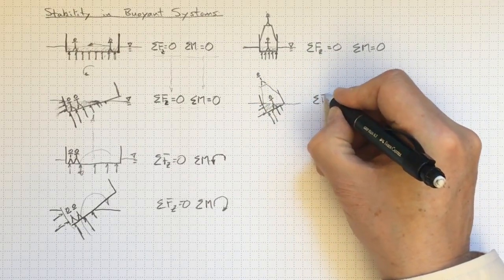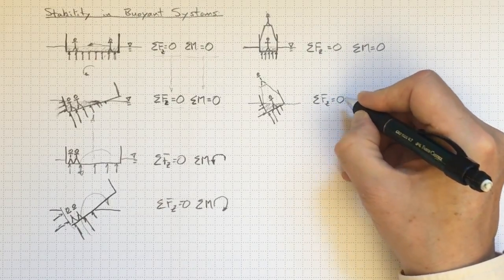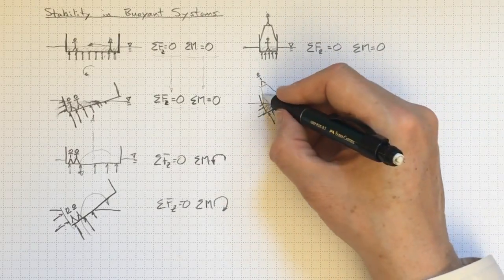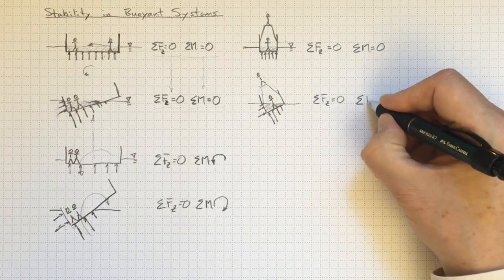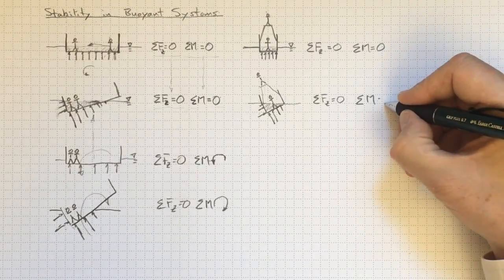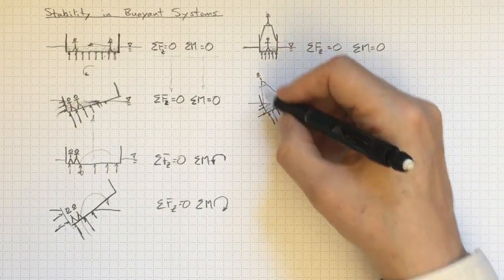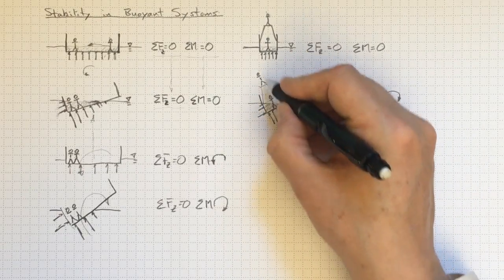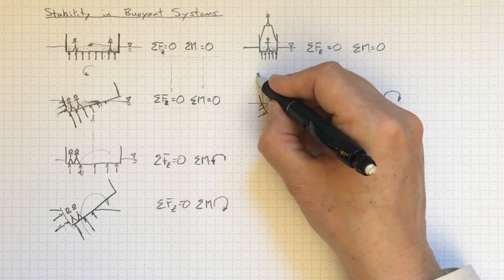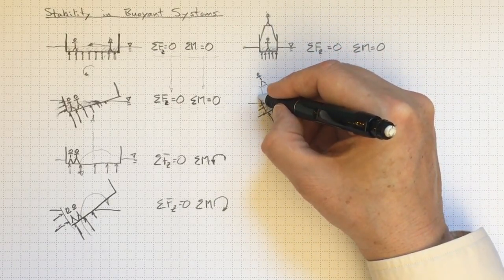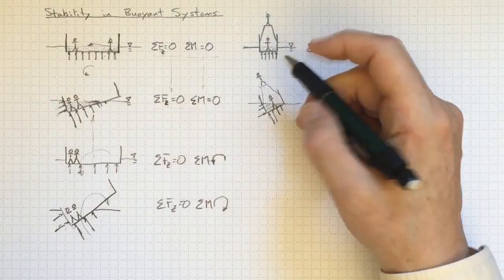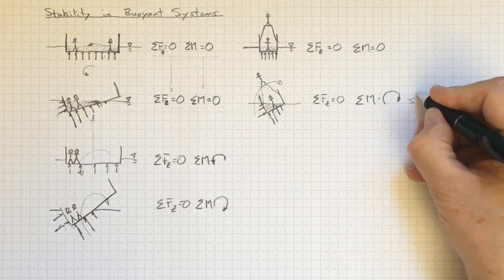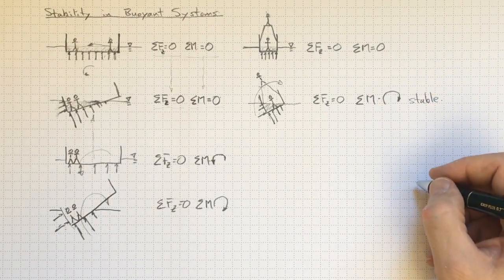The sum of the forces in the z direction are still equal to zero. And if I look at the sum of the moments here, I can imagine that the sum of the moments there might wind up giving me a returning moment. I might have more pressure force off-center than I've got bodies off-center. And that way, my boat would be stable if I pushed it over this far. It would tend to rotate back around that way. So that would be an example of a stable system.